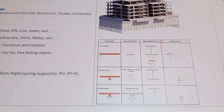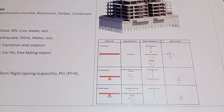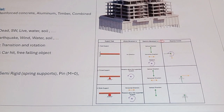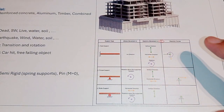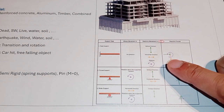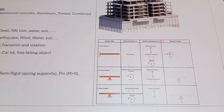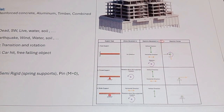For a pin support, bending is released and we have restraint only in the vertical and horizontal directions. For a roller support, we have just one vertical support direction. In some cases we may have semi-rigid supports, where bending is not completely released and there is some degree of restraint in bending or rotation.